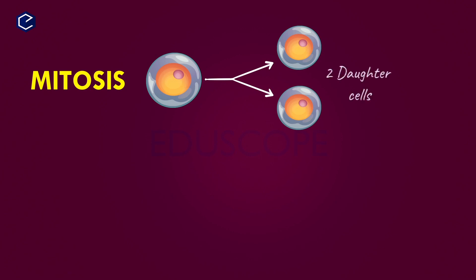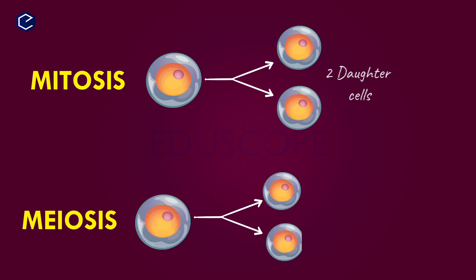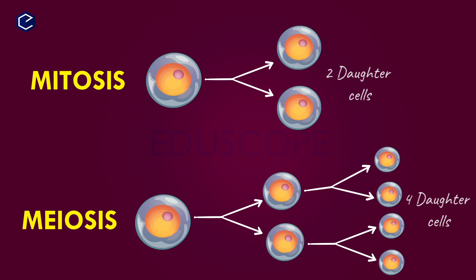Daughter cells are found in both mitosis and meiosis. In mitosis, one parent cell produces two daughter cells. In meiosis, one parent cell produces four daughter cells. There is also a difference in chromosome number between the two types.